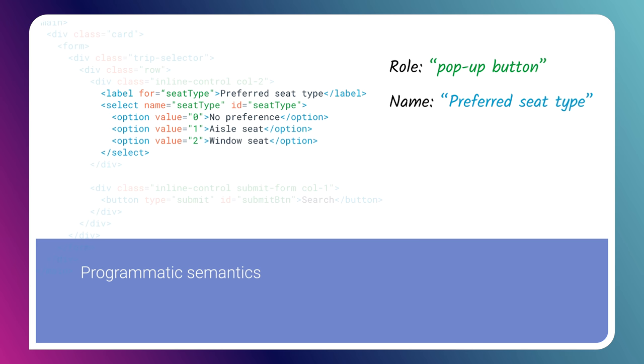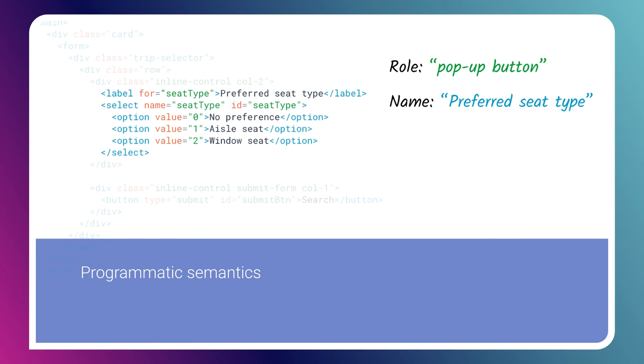The role kind of defines how someone might use this control. An element is also going to have a semantic name — and I don't mean the built-in name attribute used for submitting forms. Instead, think of the name as more like the label for the control. In this case, I have an actual label element associated with the select tag, so the name it generates is "preferred seat type." An element could also have a state — a select element, for instance, is going to have a state of expanded or collapsed. Not every element has a state, but some do, so that's additional semantic information.